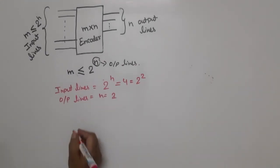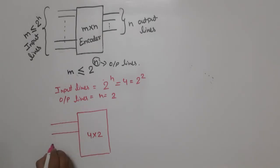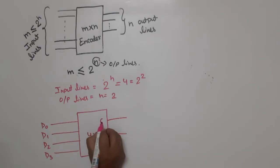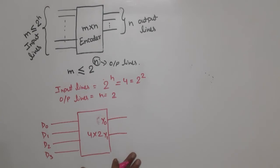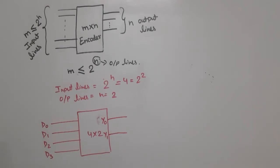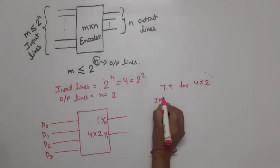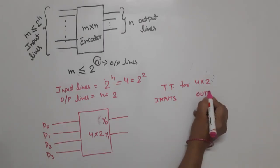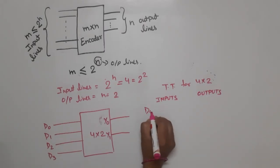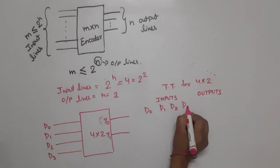First, I'm drawing the block diagram. Here we have a rectangular box for the 4-to-2 encoder with four input lines D0, D1, D2, D3 and two outputs Y0 and Y1.